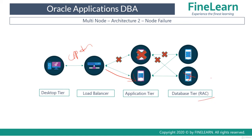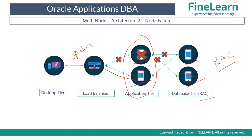This type of configuration is used by customers who are basically investing in high availability. It obviously has a lot of impact on licensing as well because there are a lot of licenses involved. You have to license all the components on the application tiers and also all the components on database tiers. For example, you'll be requiring a RAC additional license and also the license for database enterprise edition on both nodes. And similarly for WebLogic, you'll require a license for the number of processors on each node. So if the customer is going to invest in high availability, yes, then this is the best configuration.